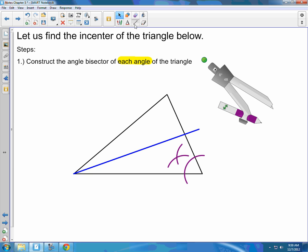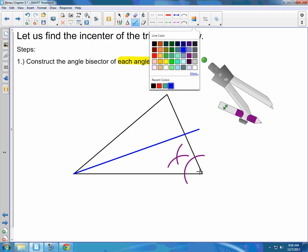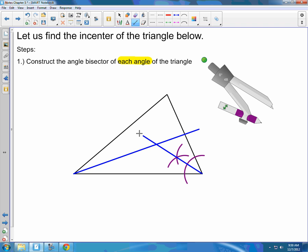So, again, take your straight edge out and connect those points. Vertex to the intersection point of arcs two and three. Clean up your picture and then proceed on to the third angle.